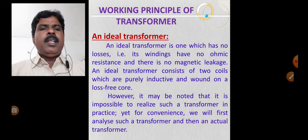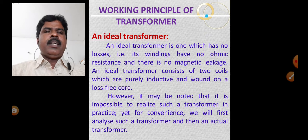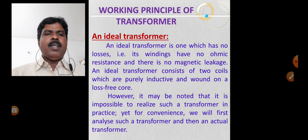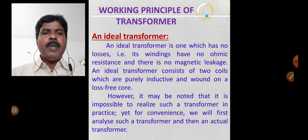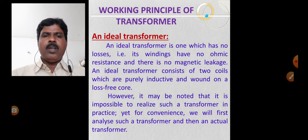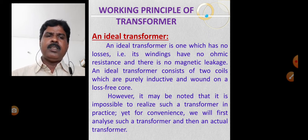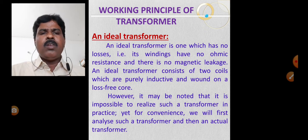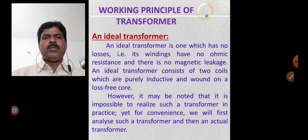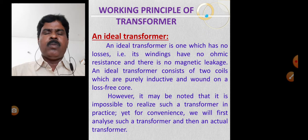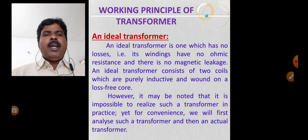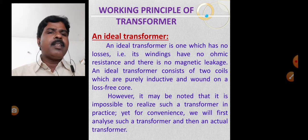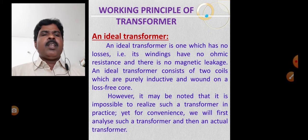An ideal transformer is one which has no losses — that is, its windings have no ohmic resistance and there is no magnetic leakage. An ideal transformer consists of two coils which are purely inductive and wound on a loss-free core.